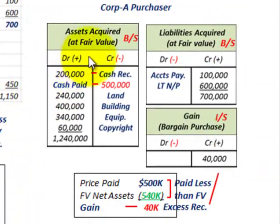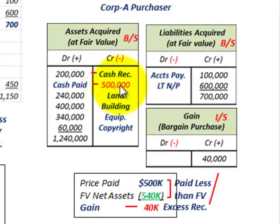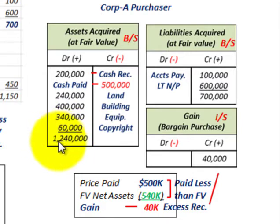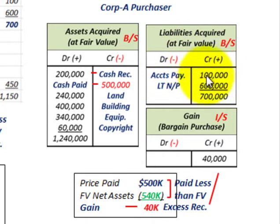Let's look at how we'd record this for Corp A, the purchaser. The assets acquired on their balance sheet would be recorded at their fair value. They would have received $200,000 in cash and debited that amount, but they paid out $500,000 in cash to buy Corp B. The other assets would be debited in their assets acquired account at their fair value amount, so total assets received were $1,240,000, reducing cash by $500,000. For liabilities acquired at fair value, there was accounts payable of $100,000 and long-term notes payable of $600,000, totaling $700,000 credited.